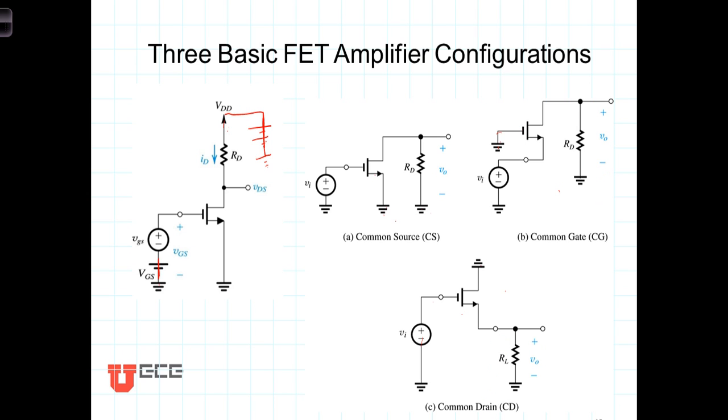Finally, this configuration, known as the common drain, comes from grounding the drain, taking the output at the source, and applying the signal to the gate. This configuration is known as the common drain, and it's also known as the source follower. By far the most commonly used of these configurations, at least when we're looking to amplify signals, is the common source configuration. We'll see also that this common drain, or the source follower, provides unity gain but also gives us some buffering by giving us a large input resistance.